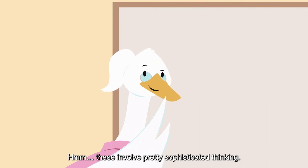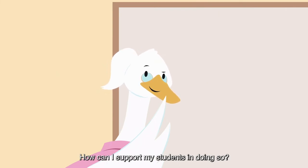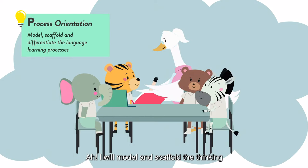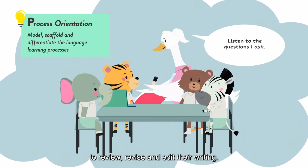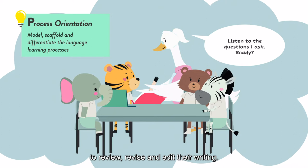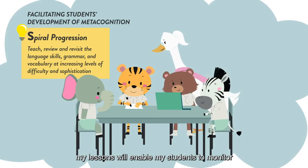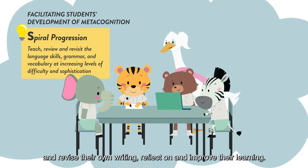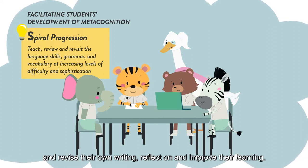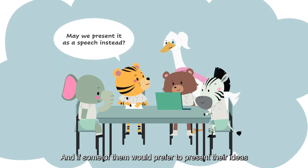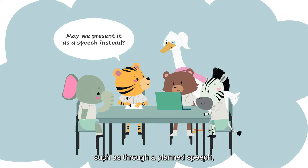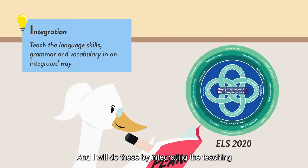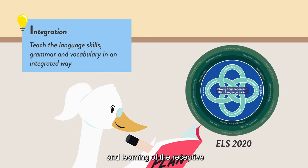These involve pretty sophisticated thinking. How can I support my students in doing so? I will model and scaffold the thinking and learning processes so that my students can learn to review, revise and edit their writing. Throughout this unit of learning, my lessons will enable my students to monitor and revise their own writing, reflect on and improve their learning. And if some of them would prefer to present their ideas in a different mode, such as through a planned speech, they can do that too. And I will do this by integrating the teaching and learning of the receptive and productive skills, grammar and vocabulary.